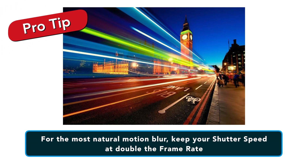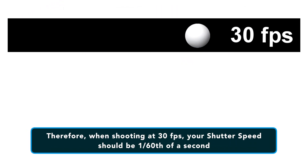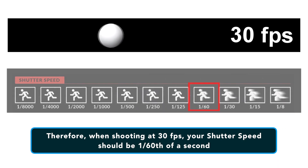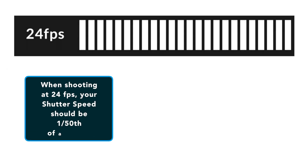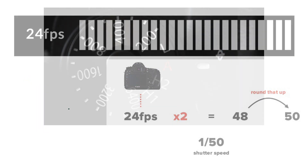Here are some quick exposure tips. For the most natural motion blur, keep your shutter speed at double the frame rate. If you're shooting 30 frames per second, which is common in the United States, this means you should be shooting at 1/60th of a second. But if you're shooting at 24 frames per second, which is common for films, you would want to shoot at 1/50th since 1/48th isn't an option.